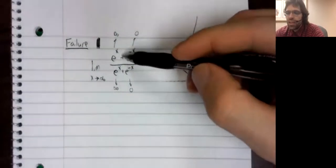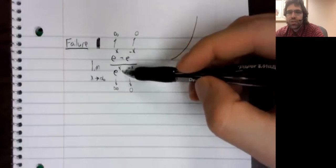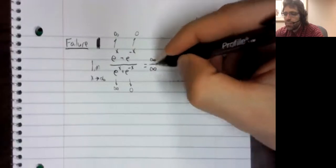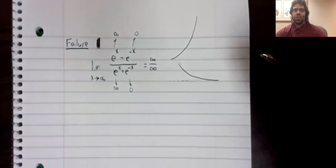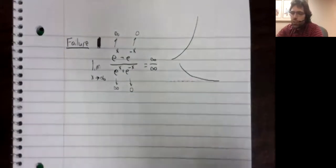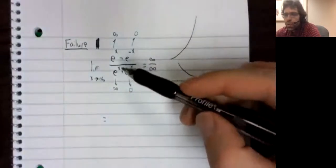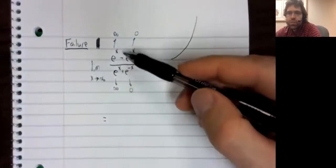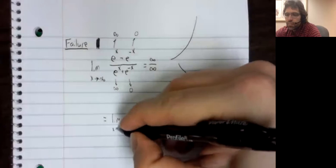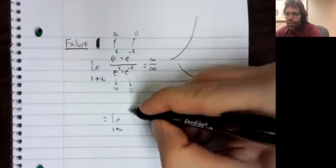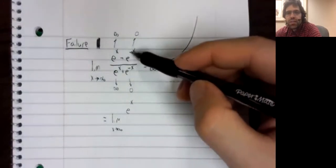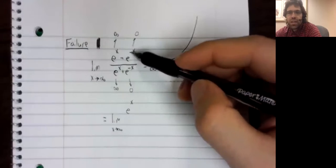Infinity minus zero and infinity plus zero are both still infinity. So this is an indeterminate form. We'll try L'Hôpital's rule. We'll take the derivative of the numerator. Derivative of e to the x is e to the x. The derivative of e to the negative x is negative e to the negative x.